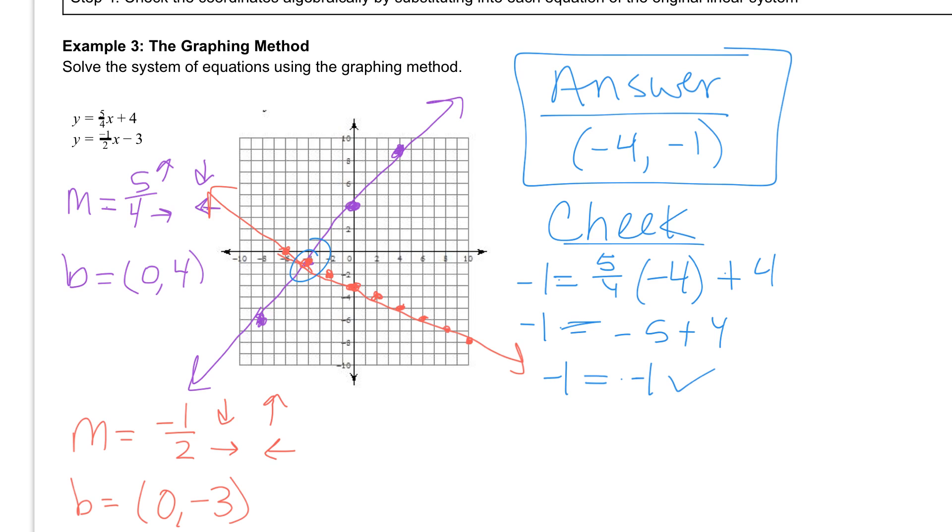But just because it works for the first equation does not mean it's going to work for the second equation. So we have to now check that second equation to make sure it works for both of them. So now I'm going to plug into this bottom equation. Starting with my y value which is negative 1. Equal to negative 1 half. Times the x value we found which was negative 4. And then minus 3.